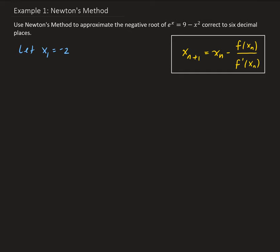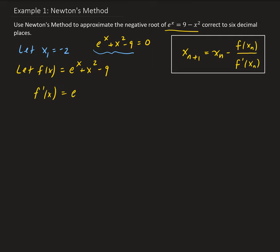The next thing we need is the function, and we also need the derivative. If you notice, we have e to the x equals 9 minus x squared, so the solution to this is the same as solving for the zeros of this function. So we're going to let f of x be equal to e to the x plus x squared minus 9. Solving this gives the same information as finding the intersection between e to the x and 9 minus x squared. So f prime of x is going to be e to the x plus 2x.